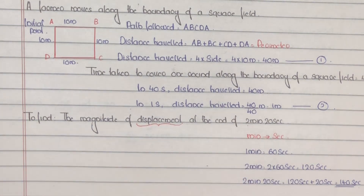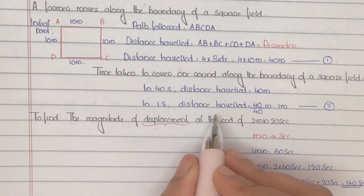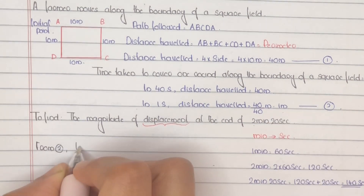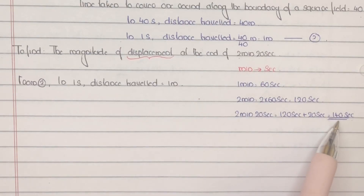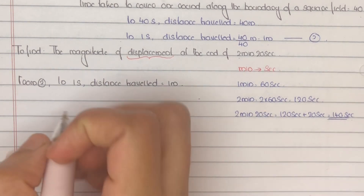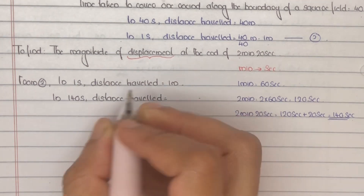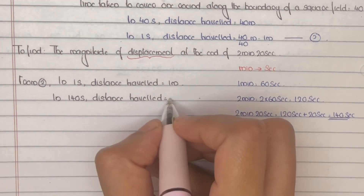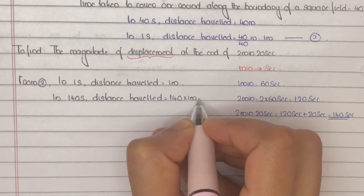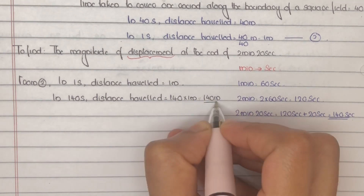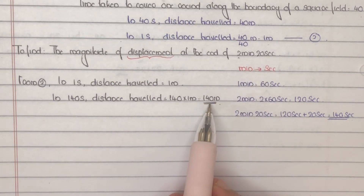The given time period is 140 seconds. From Equation 2, in 1 second the distance travelled is 1 metre, so in 140 seconds, distance travelled will be 140 × 1 = 140 metres. In the given time period, the distance travelled is 140 metres.